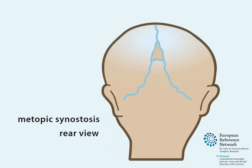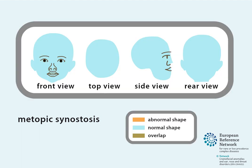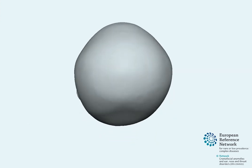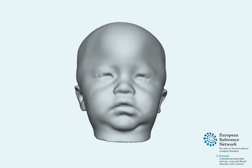From the back of the head, the compensatory occipital biparietal widening is most evident. In conclusion, metopic synostosis is characterized by a narrow wedge-shaped forehead, a vertical ridge over the metopic suture, bitemporal pinching, hypotelorism, and compensatory occipital biparietal widening at the back of the head. This is called trigonocephaly, as seen in the 3D image in the video.